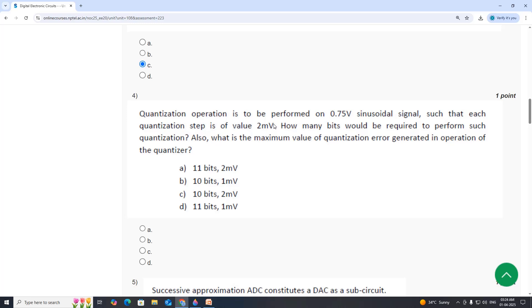Fourth: quantization operation is to be performed on 0.75V signal, such that each quantization step is of 2mV. How many bits would be required to perform such quantization? Also, what is the maximum value of quantization error generated in the operation of quantizer?